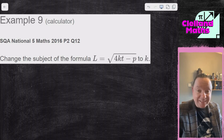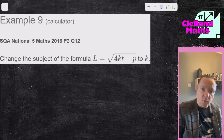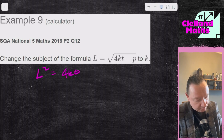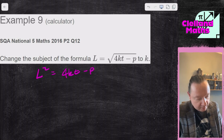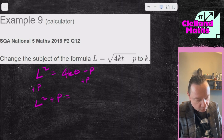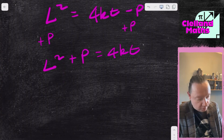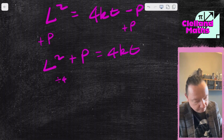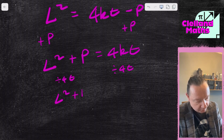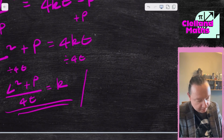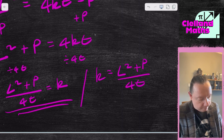Example 9 — SQA National 5 Maths 2016, Paper 2, Question 12. Change the subject of the formula l = √(4kt − p) to k. It's stuck under a square root, so step 1: square both sides — l² = 4kt − p. Now add p to both sides: l² + p = 4kt. Then divide by 4t: l² + p all over 4t equals k, or k equals (l² + p) over 4t. And we're done.